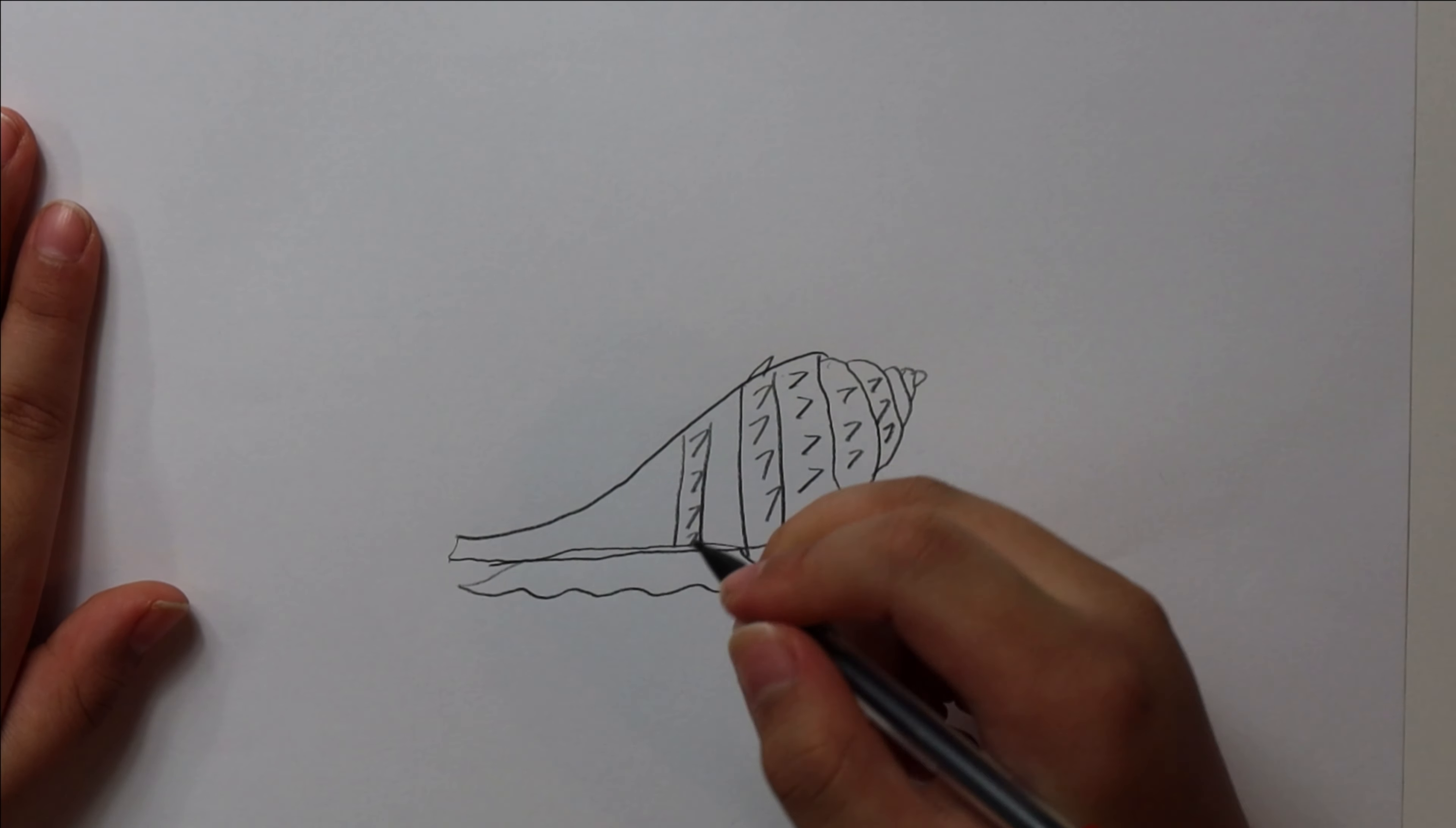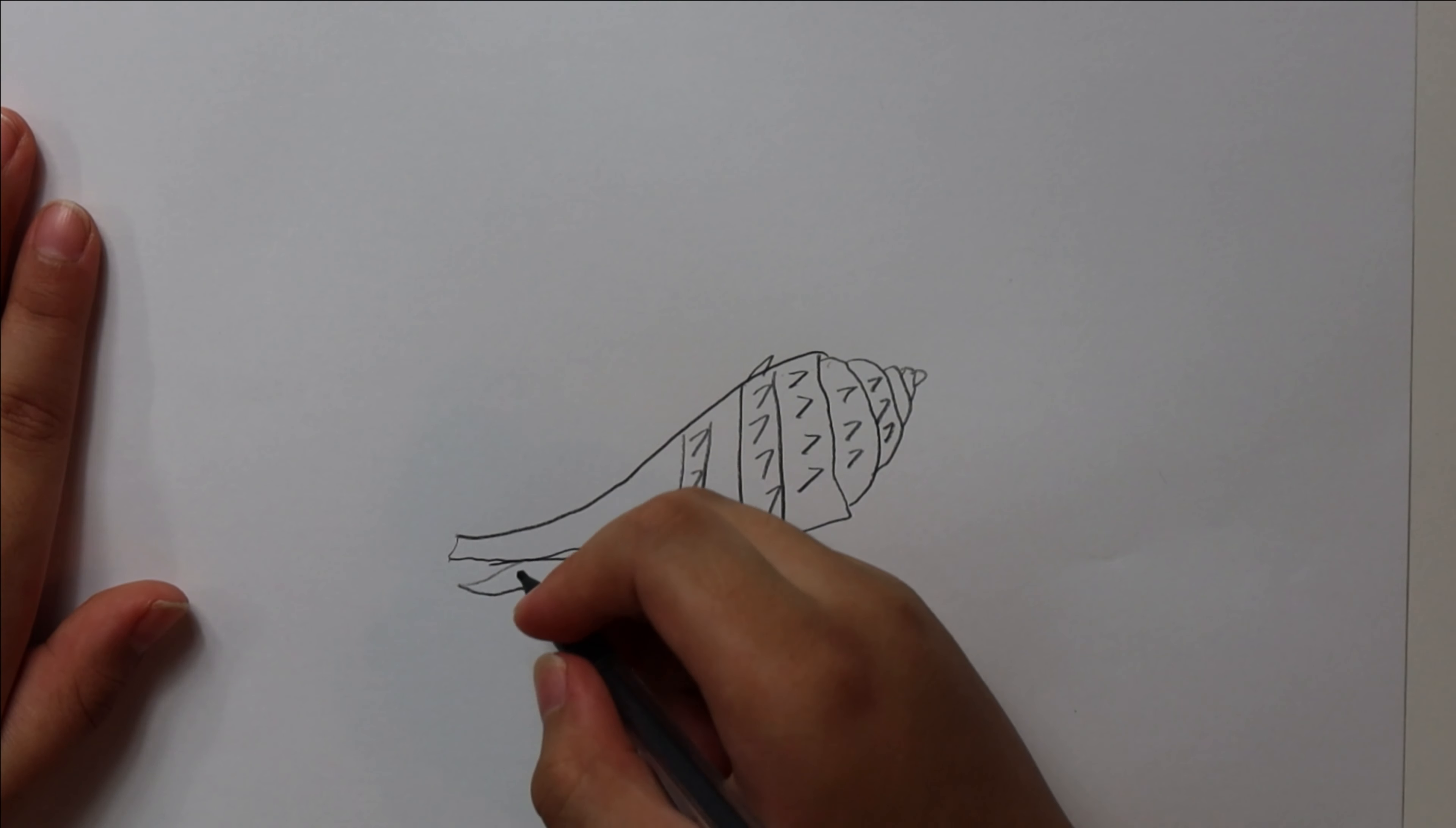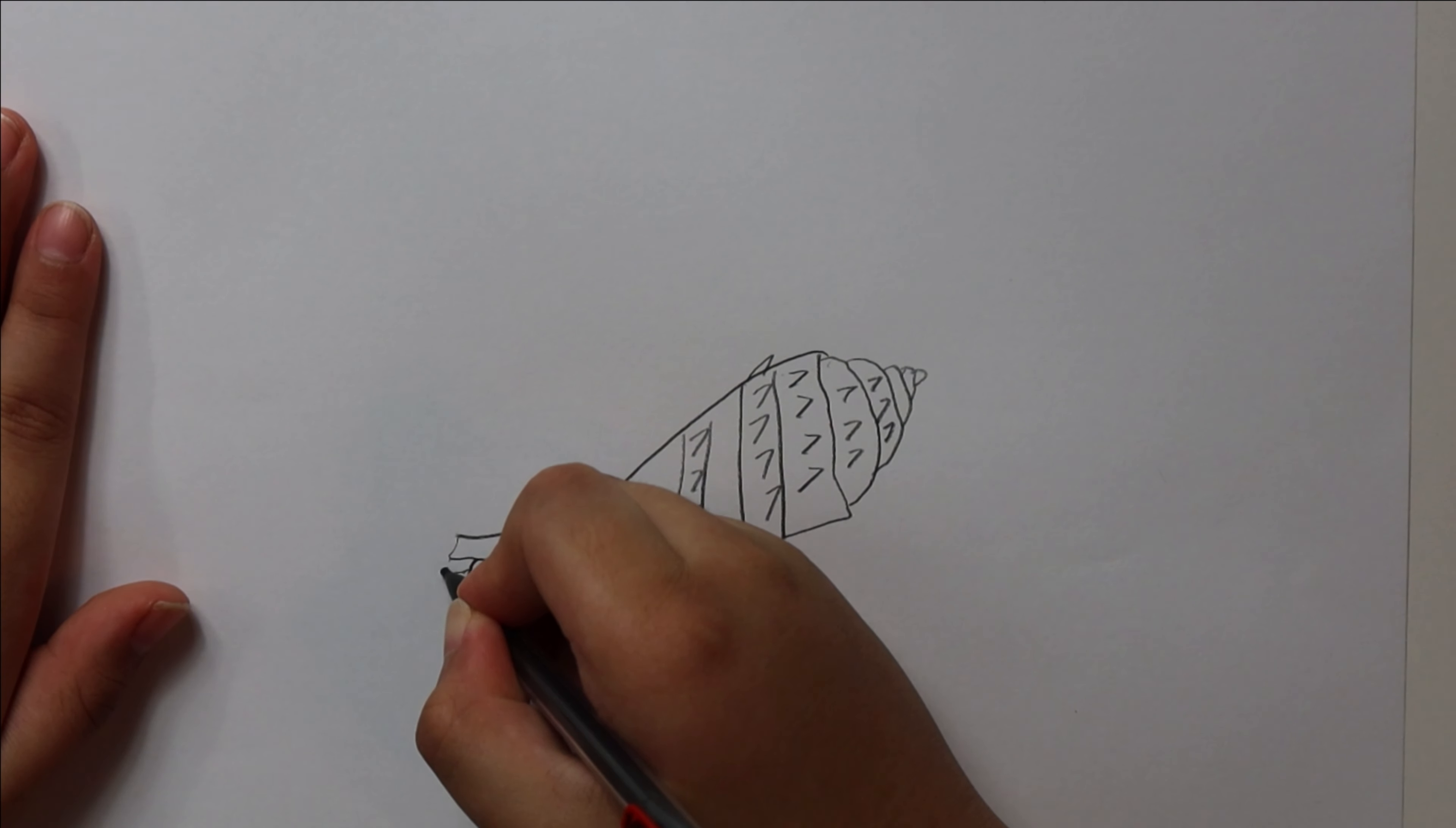Draw kind of a wavy pattern. Then draw a circle over here. Then draw two not very long tentacles.